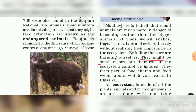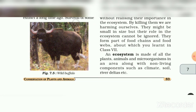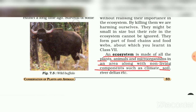They might be small in size, but their role in the ecosystem cannot be ignored. They form part of food chains and food webs, about which you learned in class 7. The ecosystem is made of all the plants, animals, and microorganisms in an area along with non-living components such as climate, soil, rivers, deltas, etc.